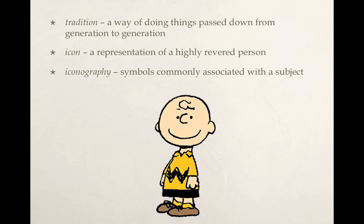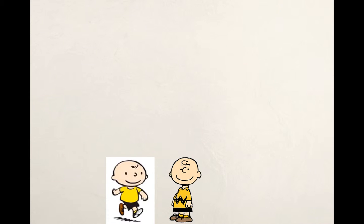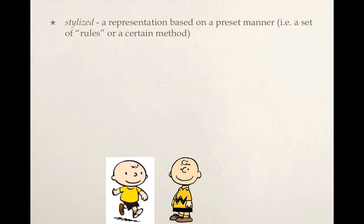Did you know that Charlie Brown didn't originally look like the cartoon you see here? Like other famous cartoon characters such as Mickey Mouse and Winnie the Pooh, Charlie Brown has changed over time. Charles Schultz first drew him with his head a little more oblong, eyes farther apart, and without the black zigzag on his shirt. This earlier version shows us how Schultz's style changed as he developed the Peanuts characters. We can easily recognize the iconography of Charlie Brown's character, but we can also see how the method changed just slightly. In art history, when a subject is represented according to a set style of rules or a certain method, we call it stylization. Once you recognize the iconography of a subject, you'll be able to identify it even if the stylization is vastly different.